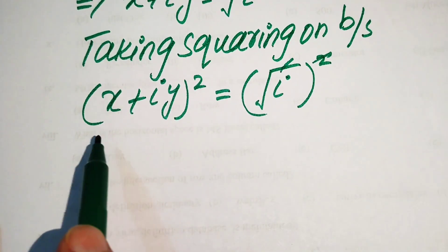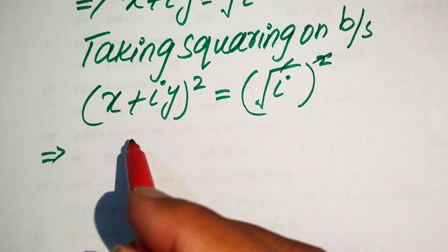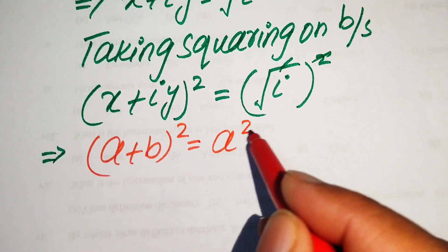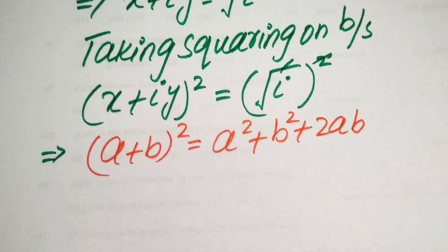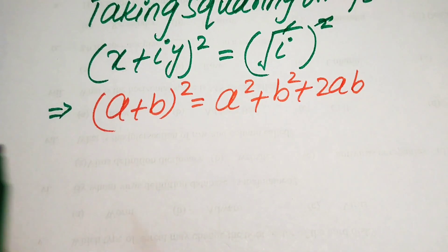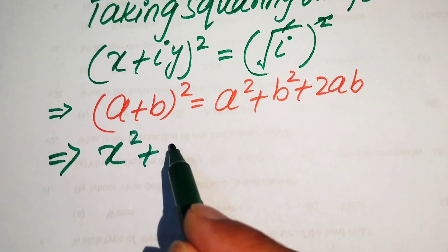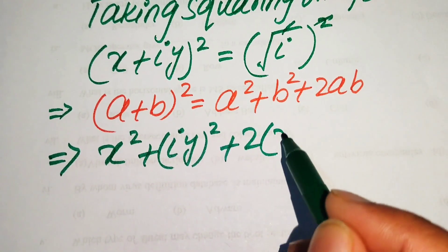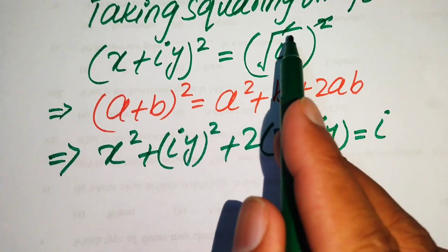On the left-hand side we use the algebraic identity: a plus b whole squared equals a squared plus b squared plus two times a times b. Applying this identity, the left-hand side becomes x squared plus iota y squared plus two times x times iota y, which equals iota.